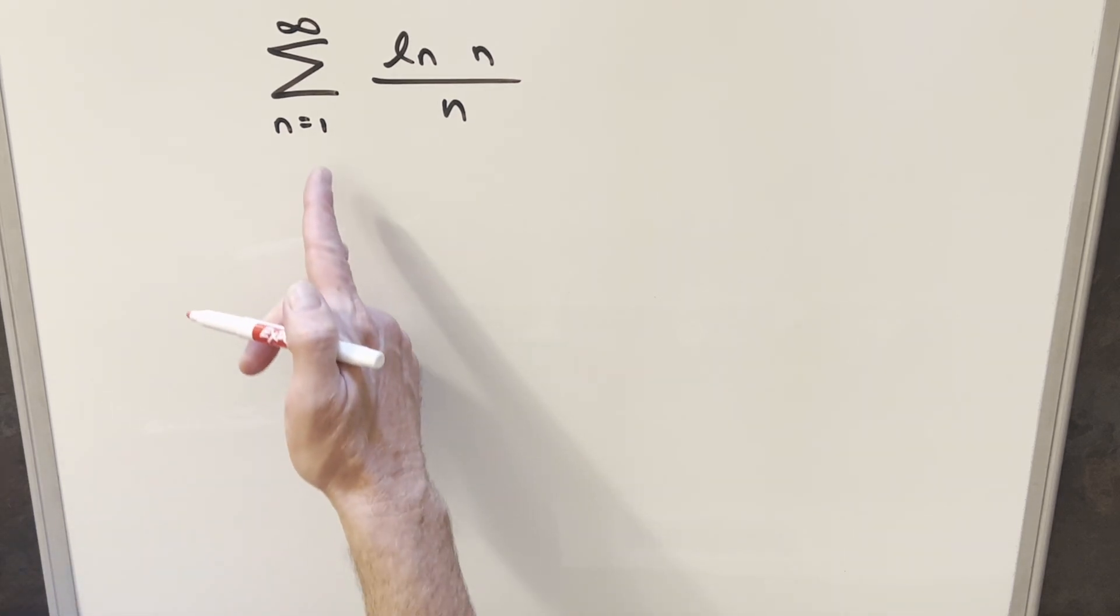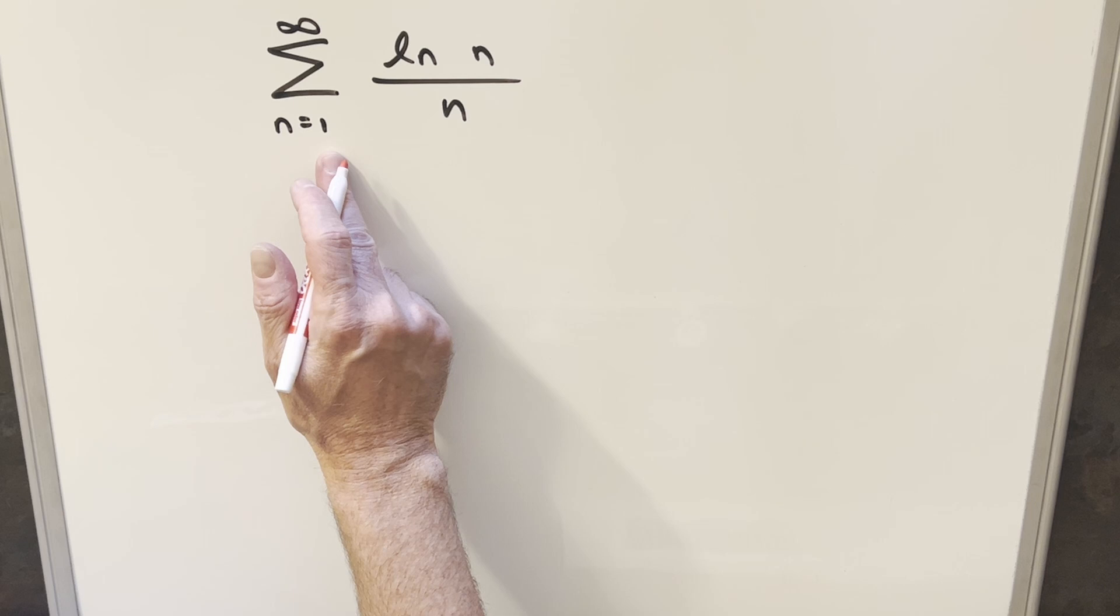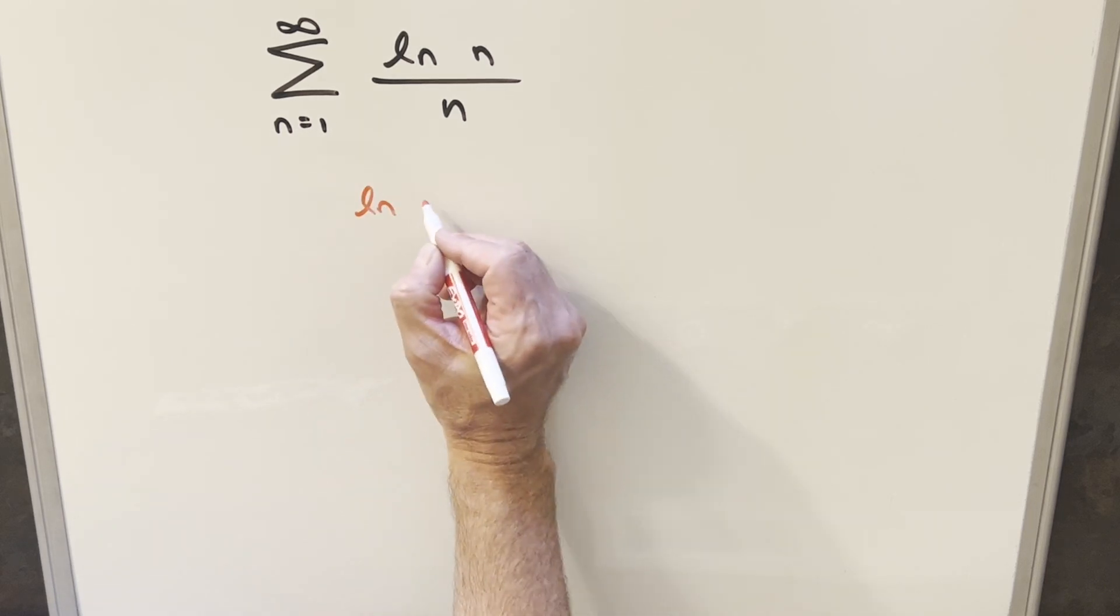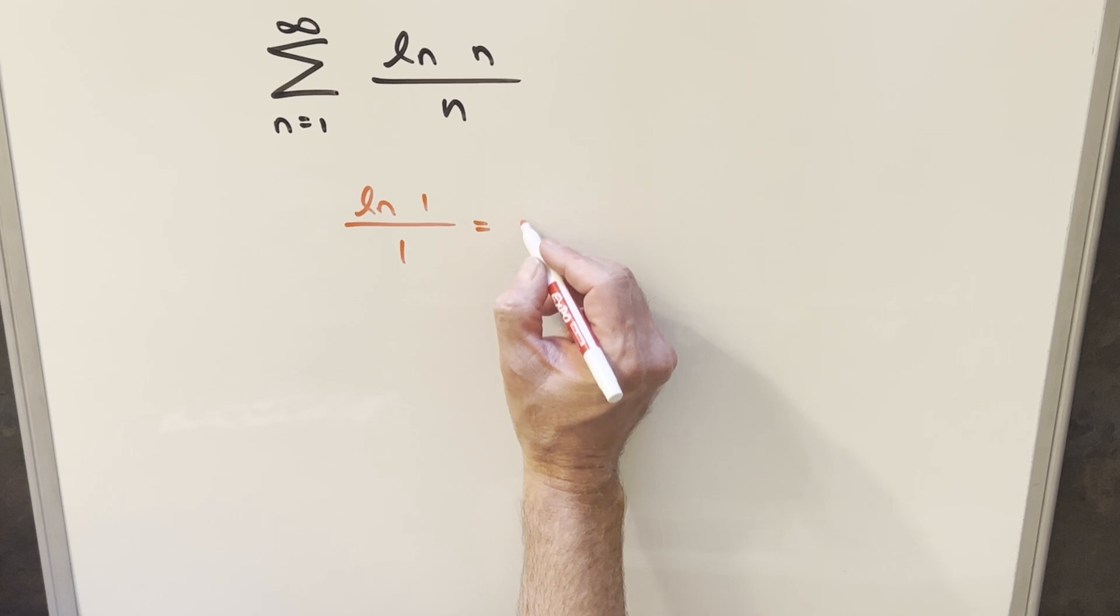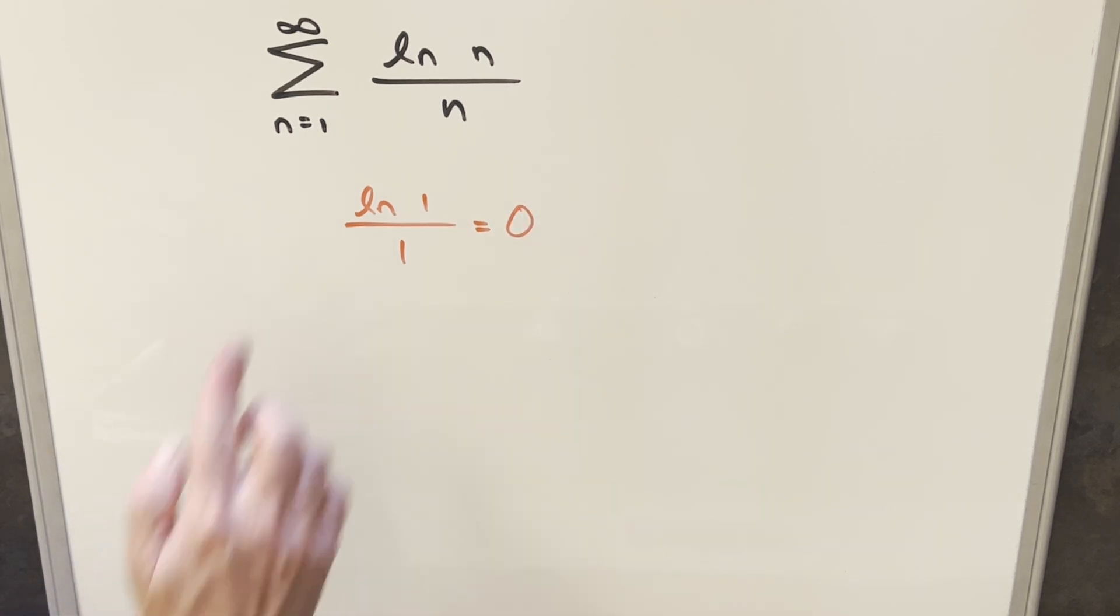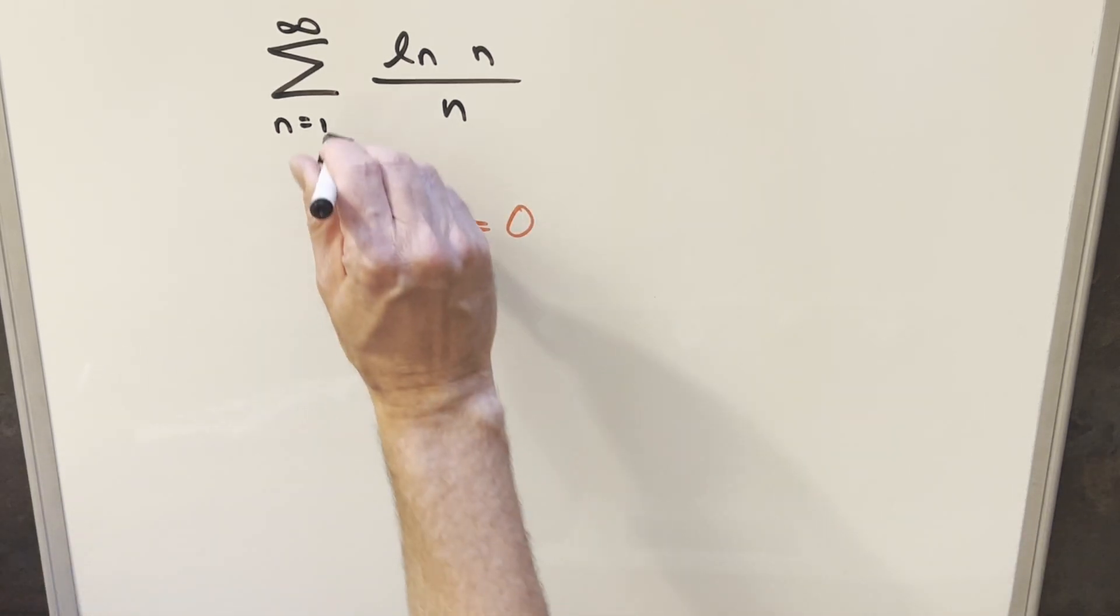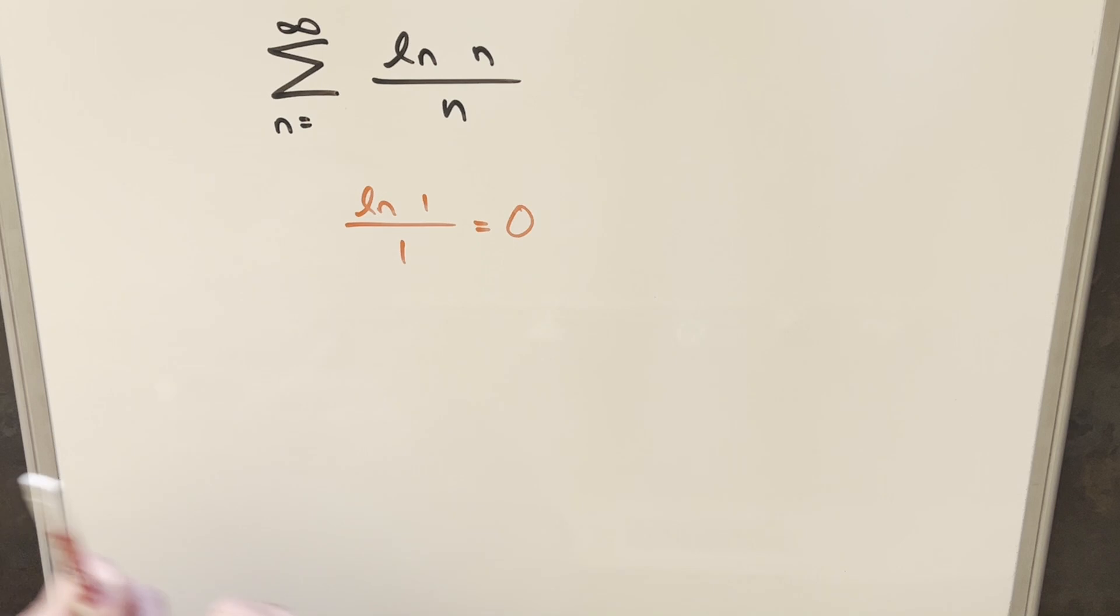Now, the first thing I notice here is kind of looking at some of the lower values. Like when n is equal to 1, we end up with just natural log of 1 over 1. Natural log of 1 is 0. So this first term is completely unnecessary. We can just kind of update our bounds and write this as a 2 right here.